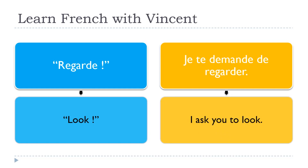Now look how we put it when we transform that into indirect speech: JE TE DEMANDE — I ask you. Remember the preposition DE comes right after the verb. The second verb should be in the infinitive form, the basic form. That's why we end up with REGARDER — with an R at the end because it belongs to the first group of verbs. JE TE DEMANDE DE REGARDER — I ask you to look.